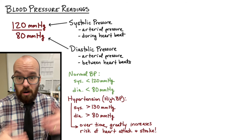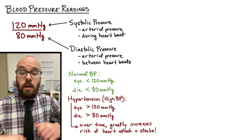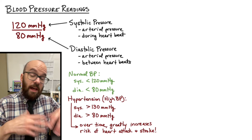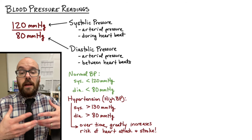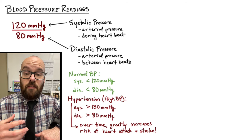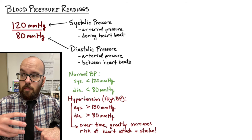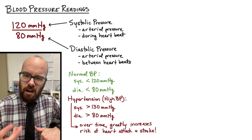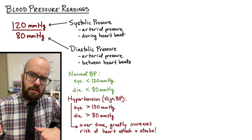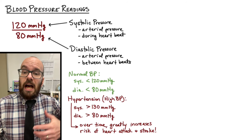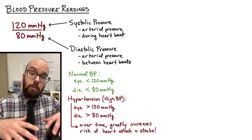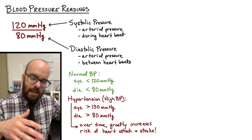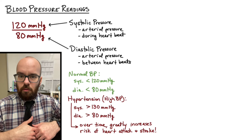Complications from high blood pressure include heart attack and stroke. On the other end, if blood pressure drops too low that can cause someone to pass out. People who pass out easily often tend to have lower blood pressure than the typical 110 over 70 range.